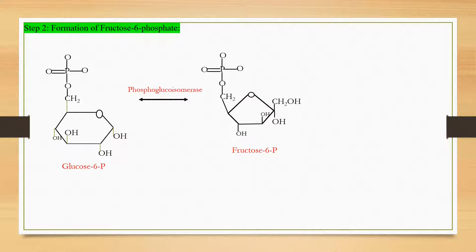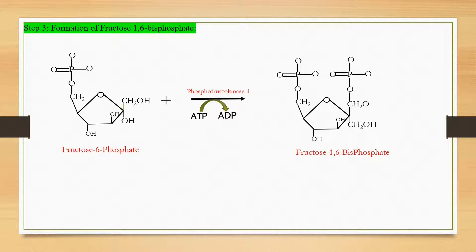Step two of glycolysis is known as formation of fructose 6-phosphate, or simply isomerization of glucose 6-phosphate to fructose 6-phosphate. The glucose will rearrange into fructose, catalyzed by an isomerase. The phosphate remains on carbon number six. This reaction is essential in order to prepare carbon number one for another phosphorylation.